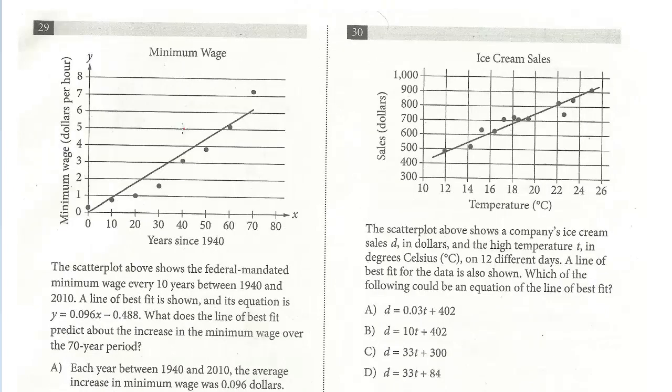So let's take a look at 29. We have a scatter plot above. It shows the federally mandated minimum wage every 10 years between 1940 and 2010. A line of best fit is shown. The equation is y equals 0.096x minus 0.488. What does the line of best fit predict about the increase in the minimum wage over the 70-year period?